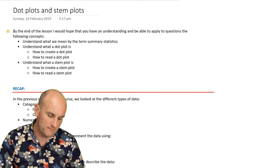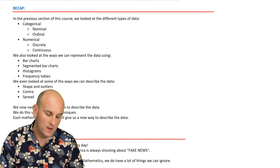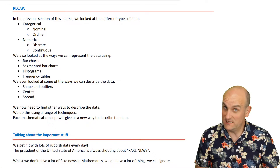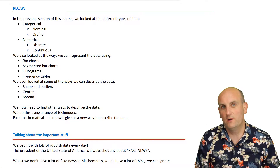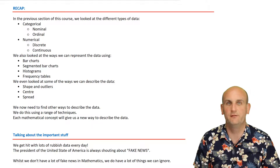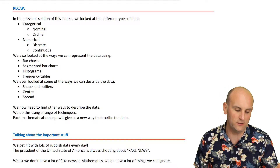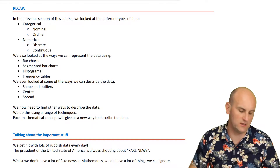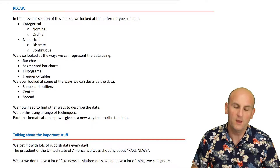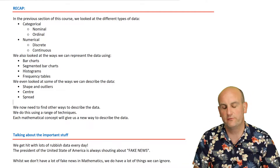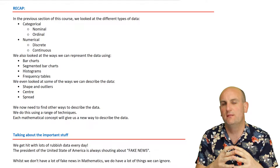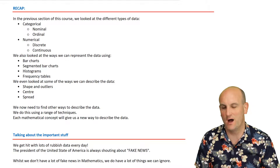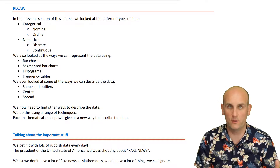Now, dot plots and stem plots might not necessarily be new, but they are building on the work we've already done here in further maths. We've already done one whole chapter's worth of work. As I say here in the recap, we have looked at categorical and numerical data — bar charts, segmented bar charts, histograms, and frequency tables.